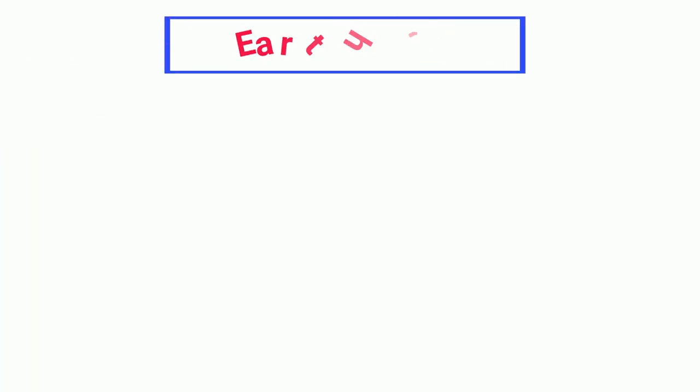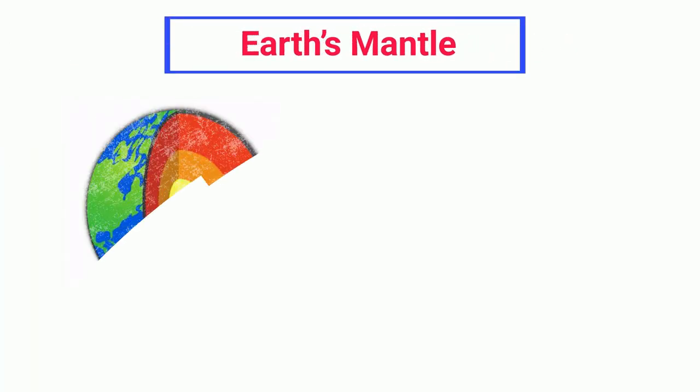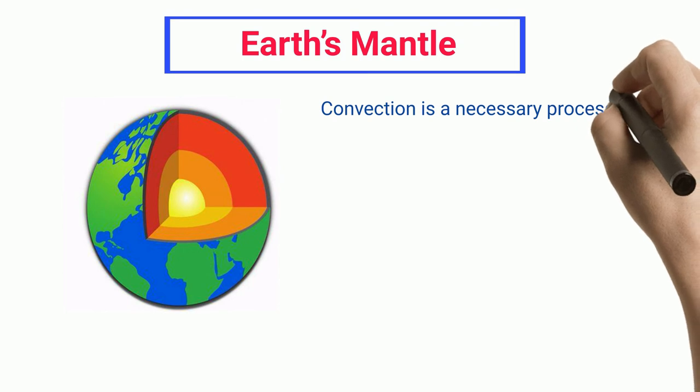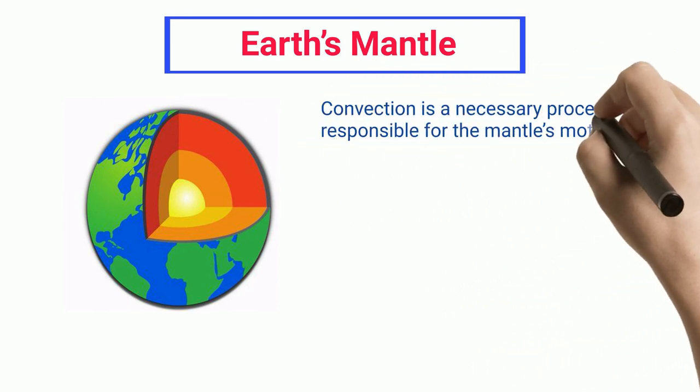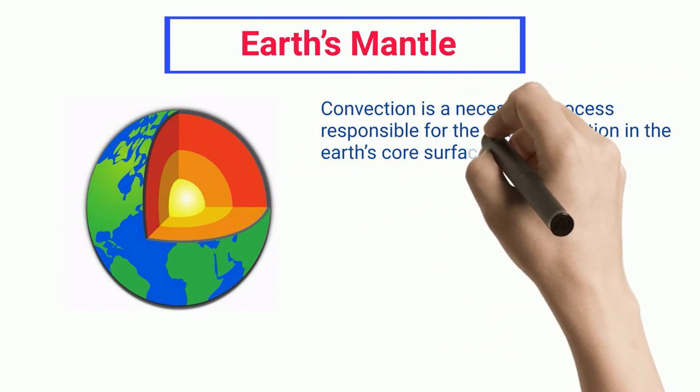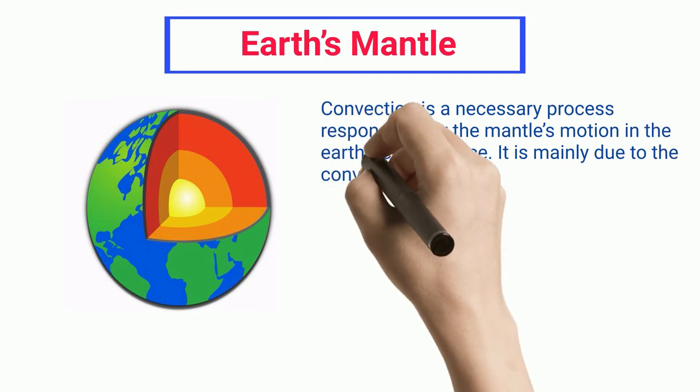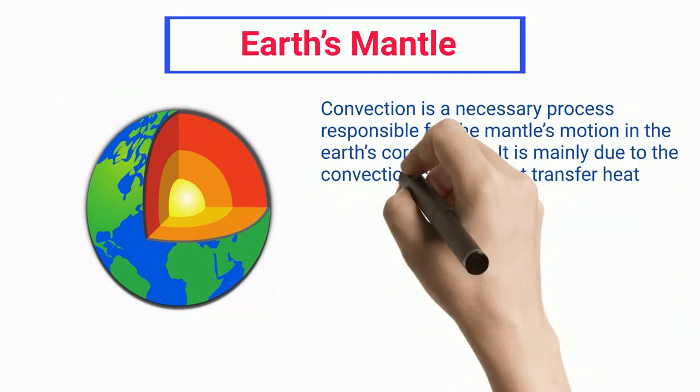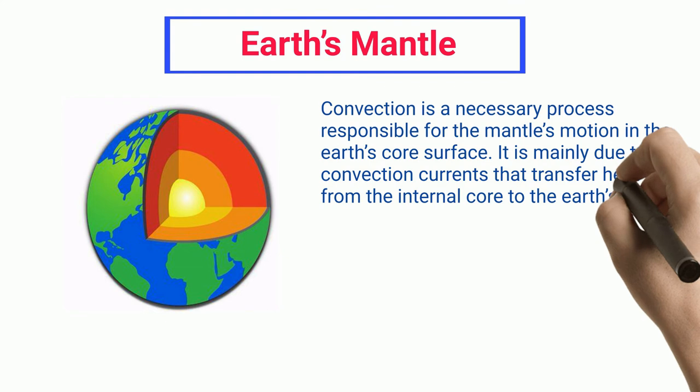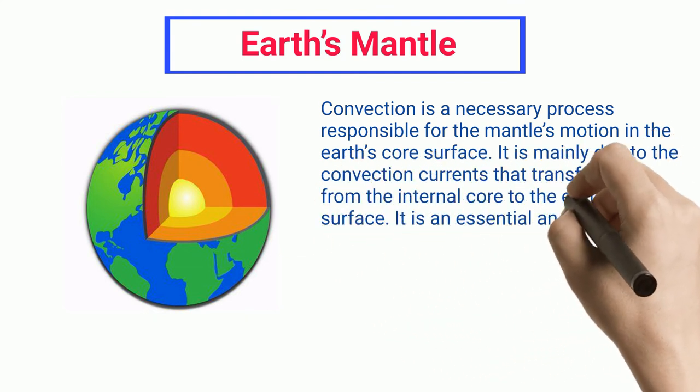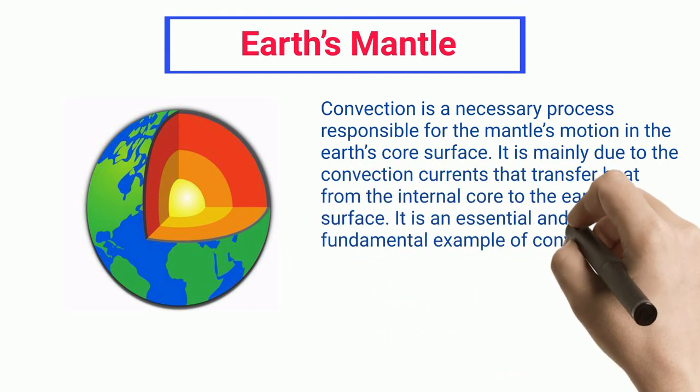Earth's Mantle: Convection is a necessary process responsible for the mantle's motion in the Earth's core surface. It is mainly due to the convection currents that transfer heat from the internal core to the Earth's surface. It is an essential and fundamental example of convection heat transfer.